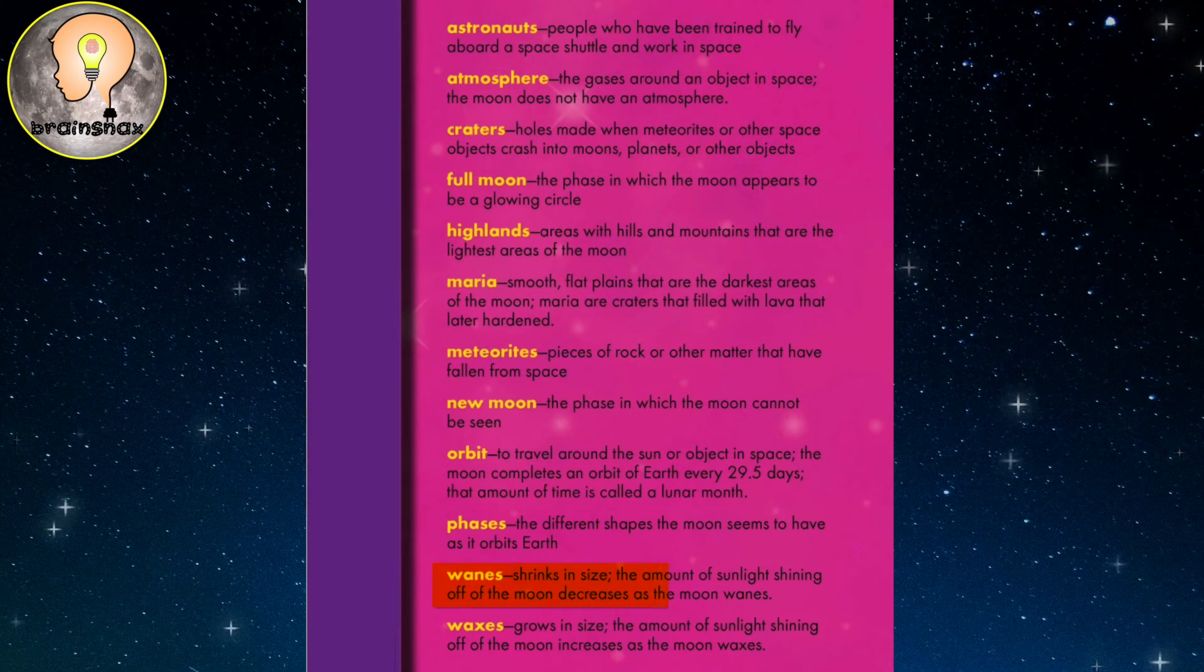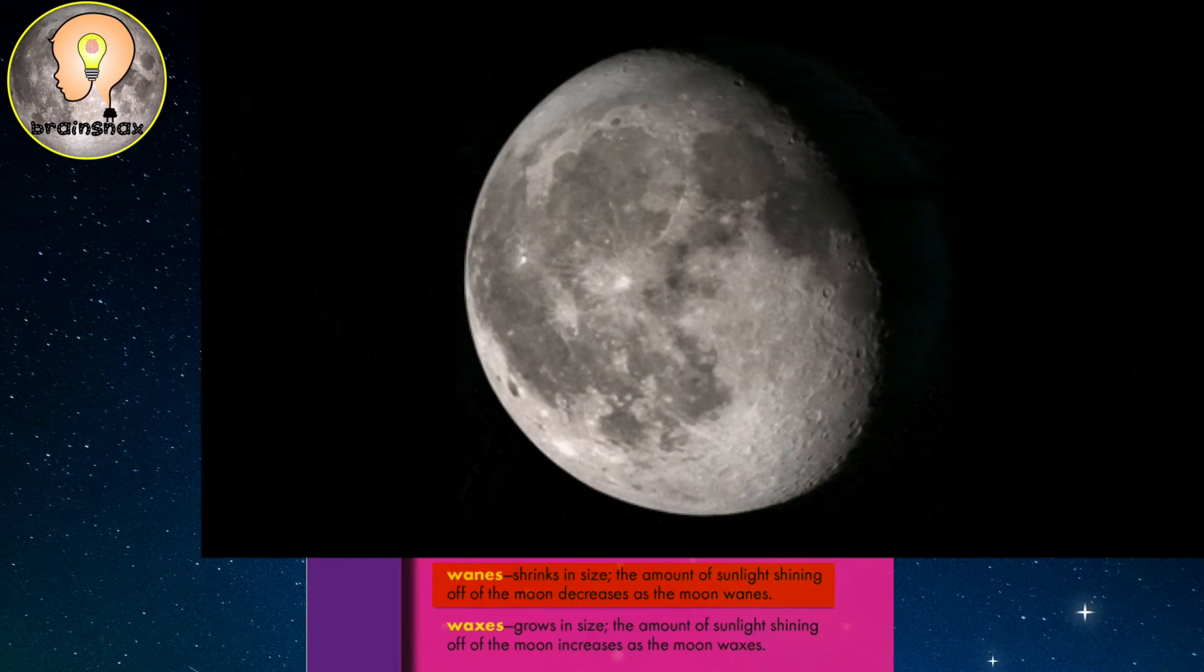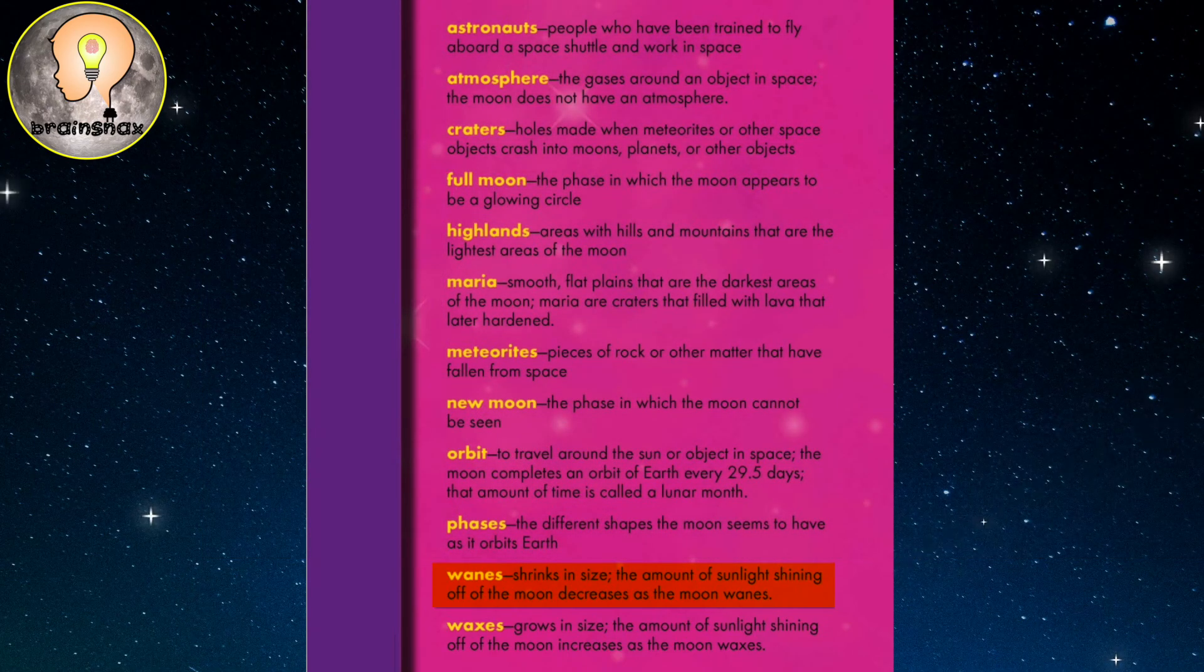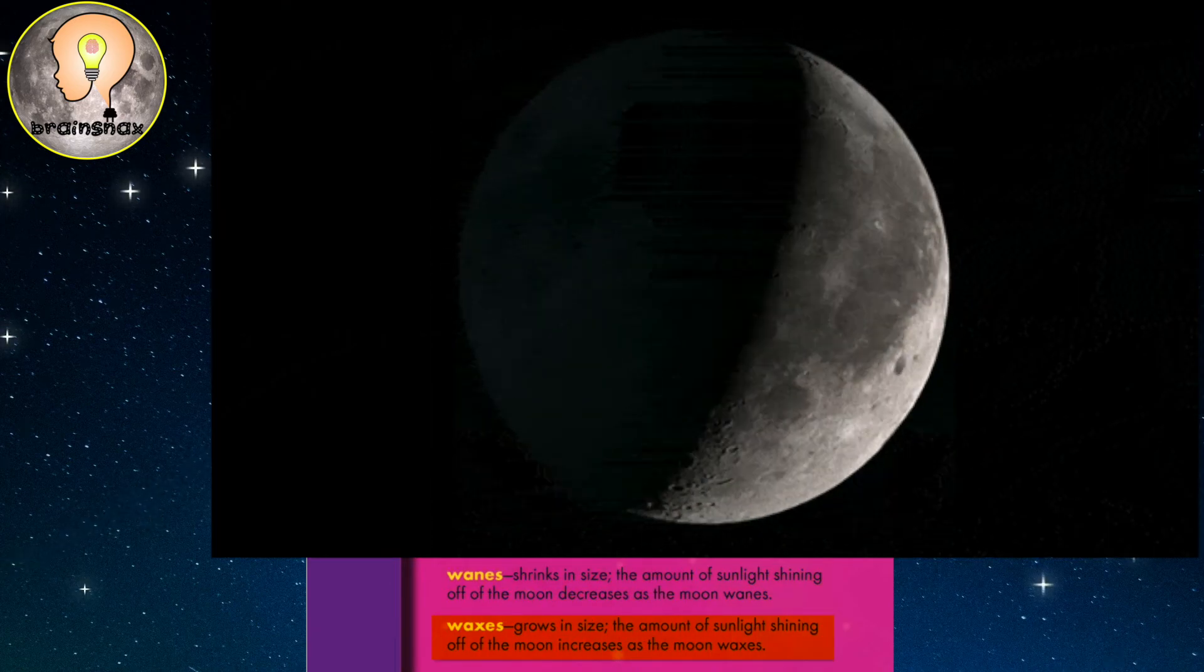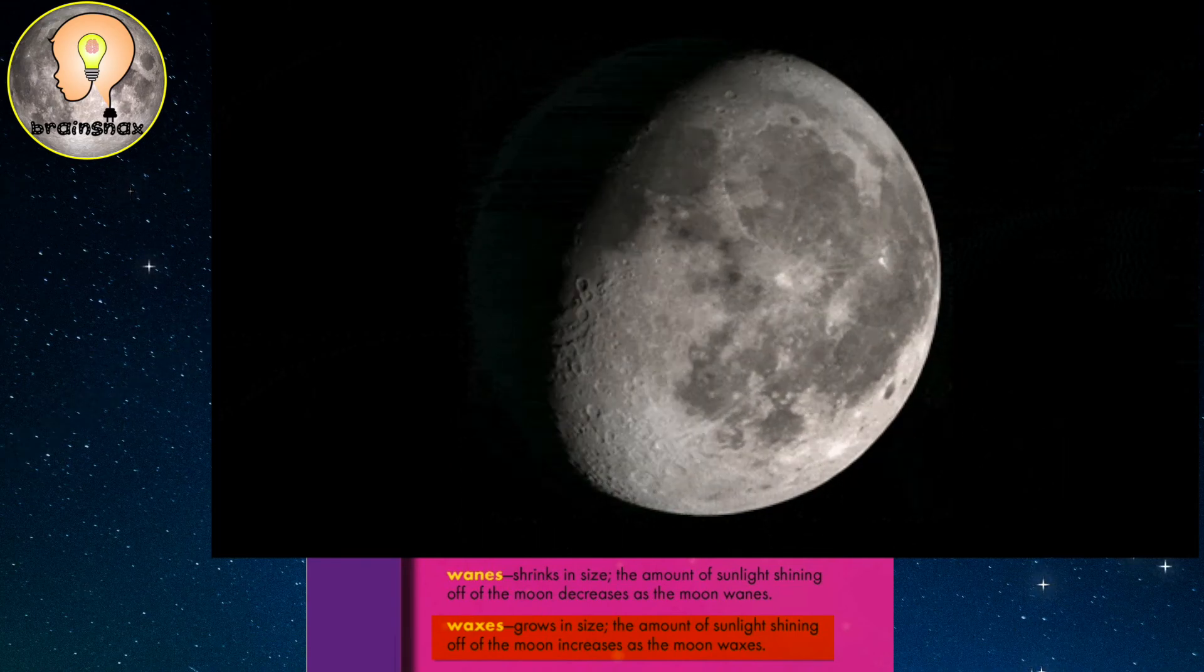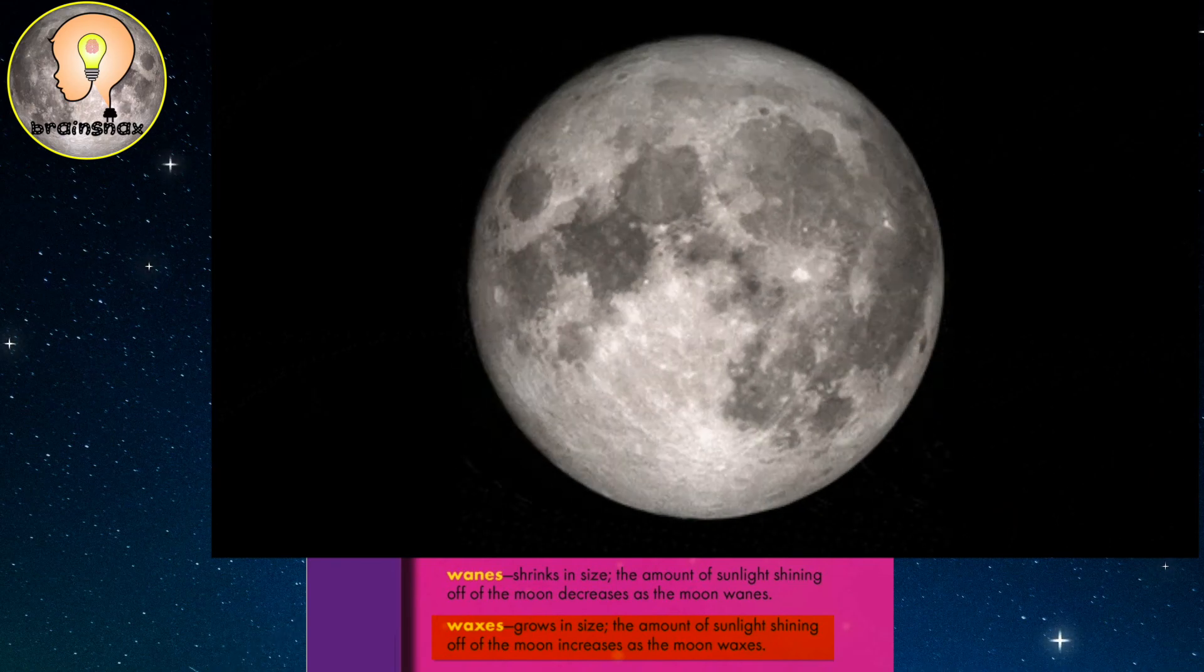Wanes: shrinks in size. The amount of sunlight shining off of the moon decreases as the moon wanes. And waxes: grows in size. The amount of sunlight shining off of the moon increases as the moon waxes.